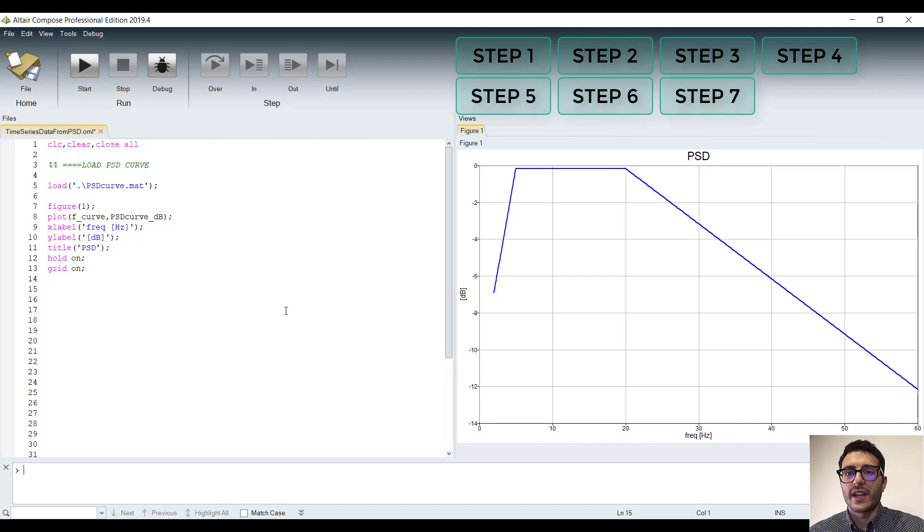Now we can define the final time, which will determine the frequency resolution. Then we define the frequency range, and we get the sampling frequency, leveraging the Nyquist theorem. Knowing the sampling frequency and the final time, we can build the time vector.